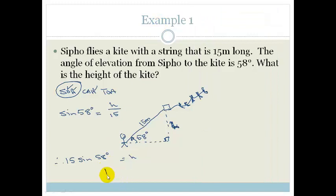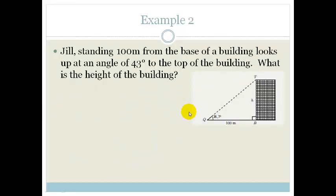So therefore, the height of the kite is 12.72 meters. Let's look at another example. In this one, we've got Jill. And Jill is standing at the base of a building, which is 100 meters away. They tell us that this angle here is 43 degrees. And they want to know how tall is the building.